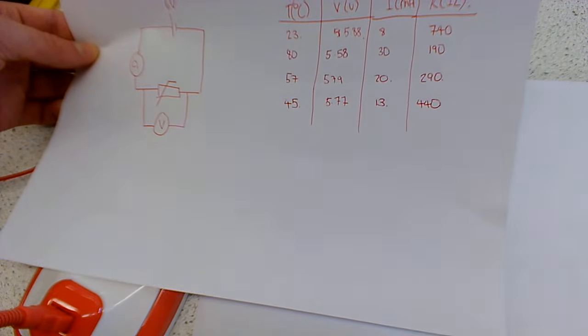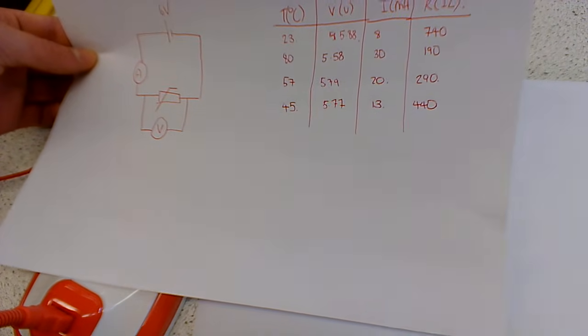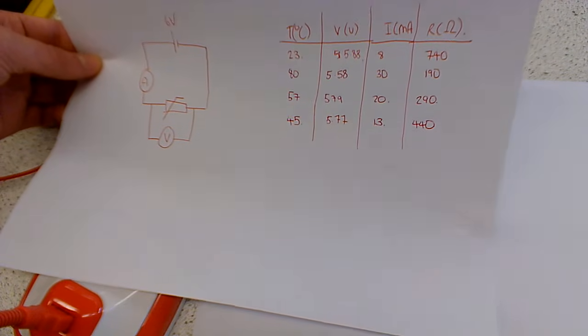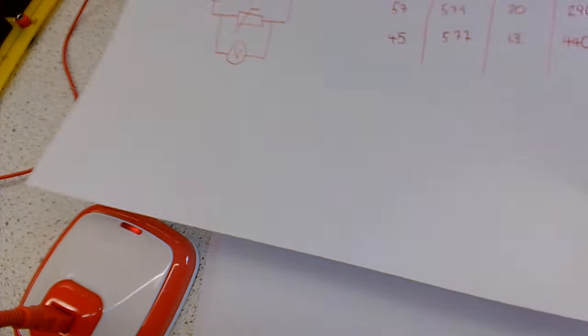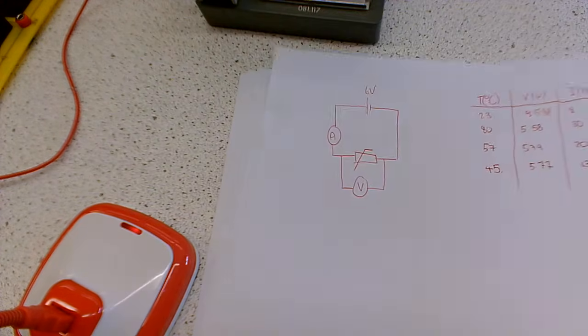So it looks like the higher the temperature is, the lower the resistance is for our thermistor. So that's a general rule. So then we might ask ourselves, are they inversely proportional? Well, we're going to need to do a calculation to figure that out.